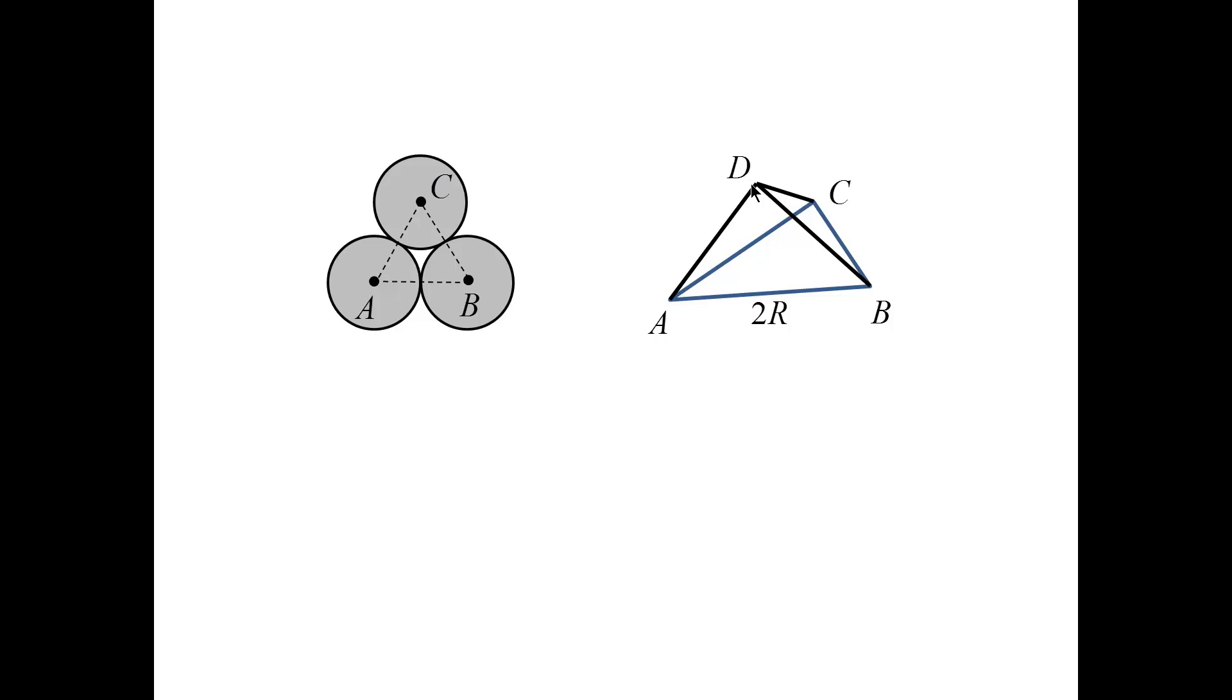For my purposes, it is useful to identify the point O, which is the projection of D onto the horizontal plane ABC. As a result, I obtain the triangle ADO, and this triangle will play a crucial role in my solution. To get a hold of this triangle, I will need first to consider the triangle AOB. Once I analyze the triangle AOB, I will be able to determine the length AO, and this will give me access to the triangle ADO.